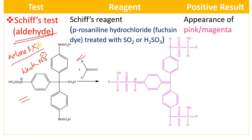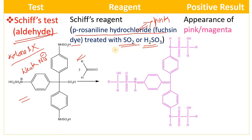What is the Schiff's reagent? It is para-rosaniline hydrochloride, which is a fuchsin dye. The color of this dye is pink. When this pink-colored dye is treated with sulfur dioxide or sulfurous acid, there is formation of a colorless compound. The Schiff's reagent is colorless.